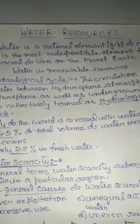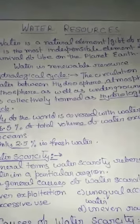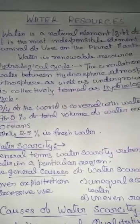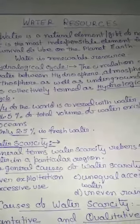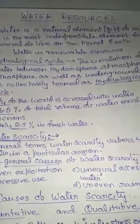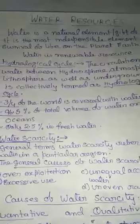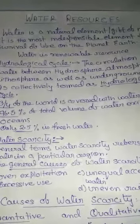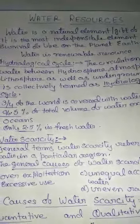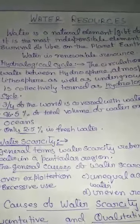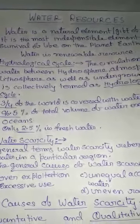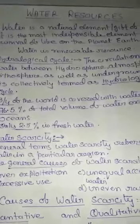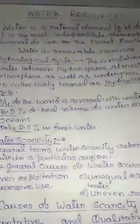Friends, today we start the third chapter of Geography: Water Resource. Water is the most indispensable element for survival of life. Water is a natural gift and it is available in abundance. When the same water is used by human beings for social and economic development, it changes into a resource.